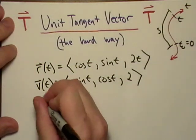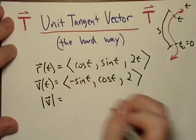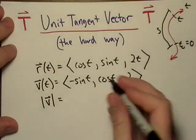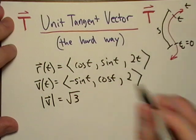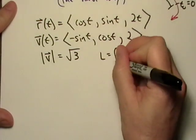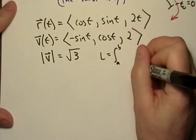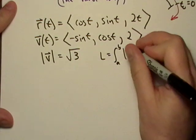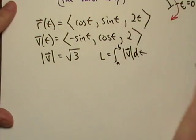Now what's the magnitude? We actually figured that out in the last video, and that was square root of three. Now, remember, if we want the length of this thing, normally we'd go from A to B, and we'd take the integral of the velocity.